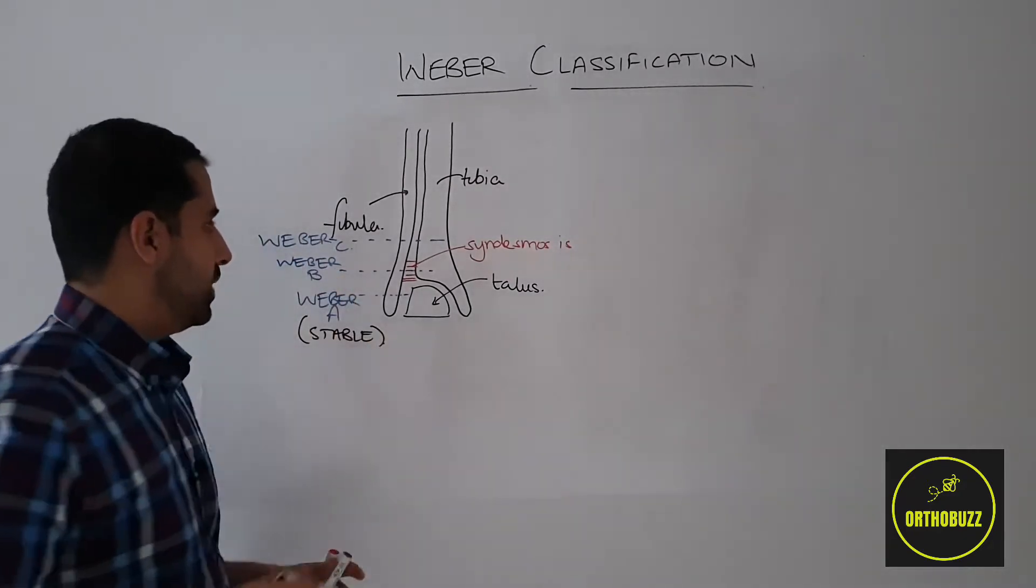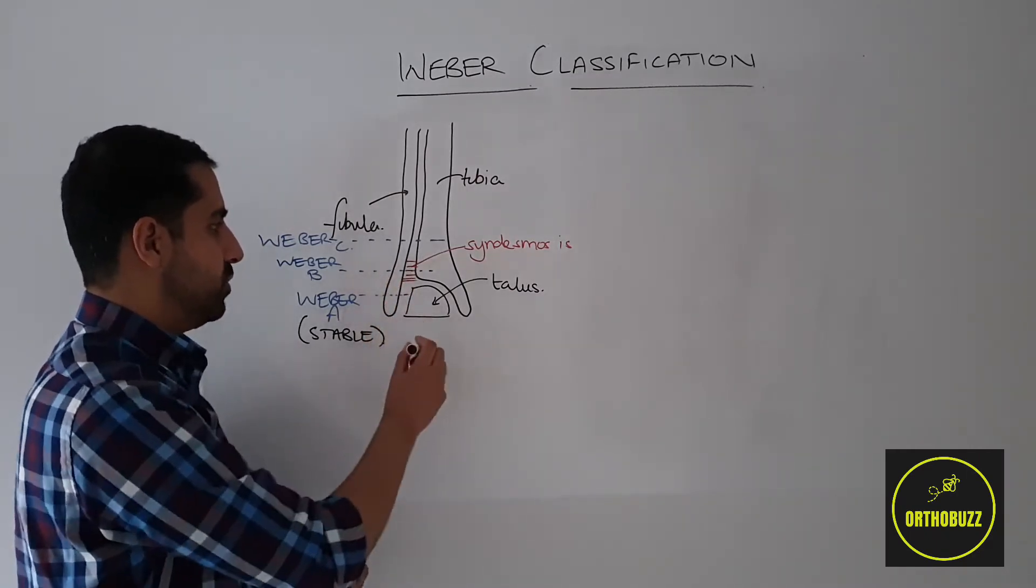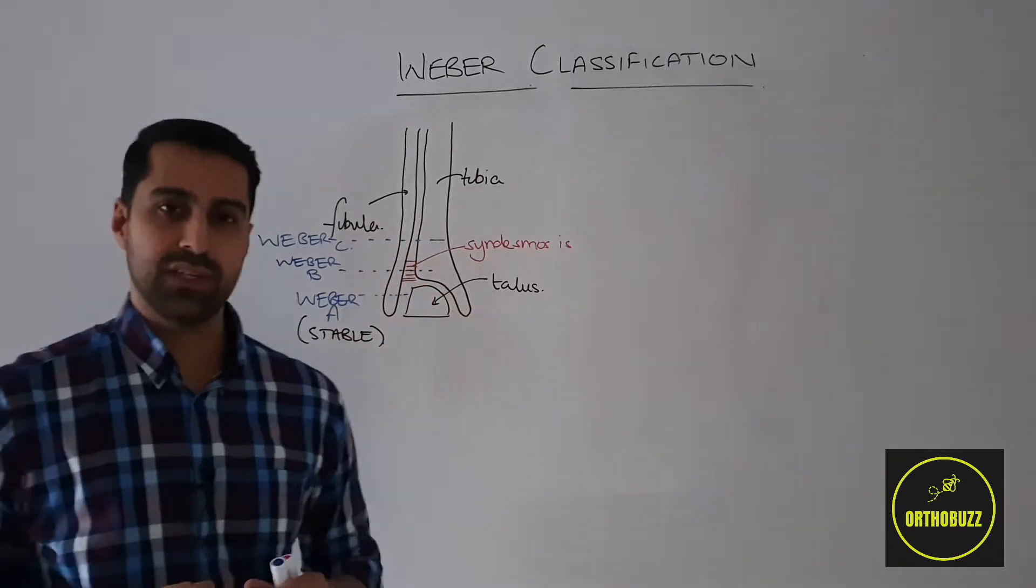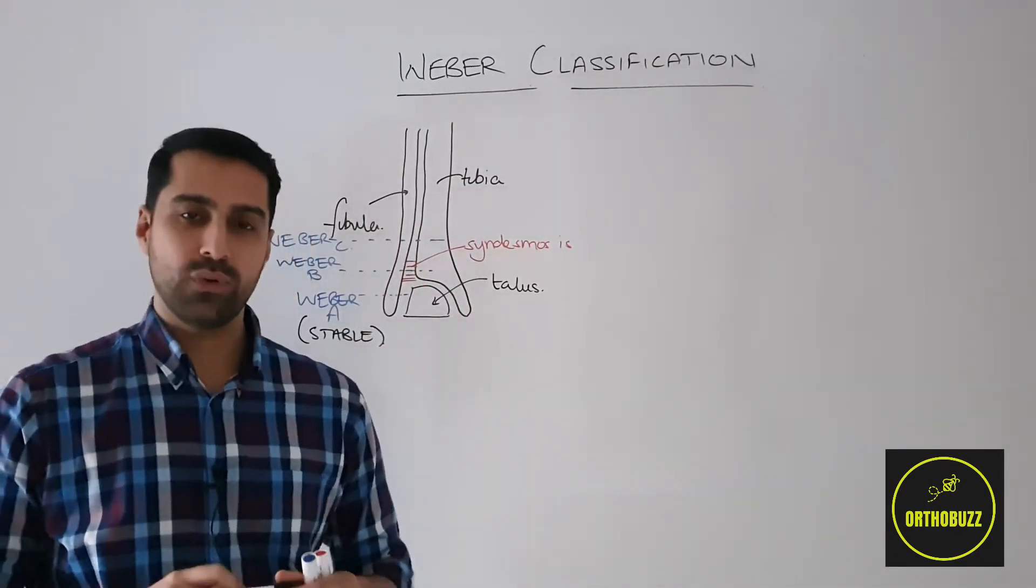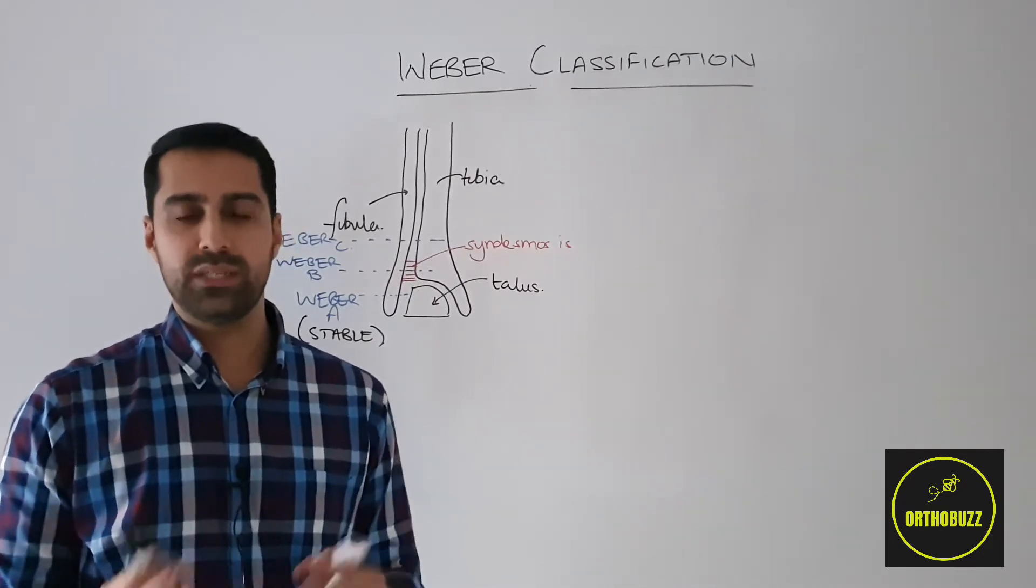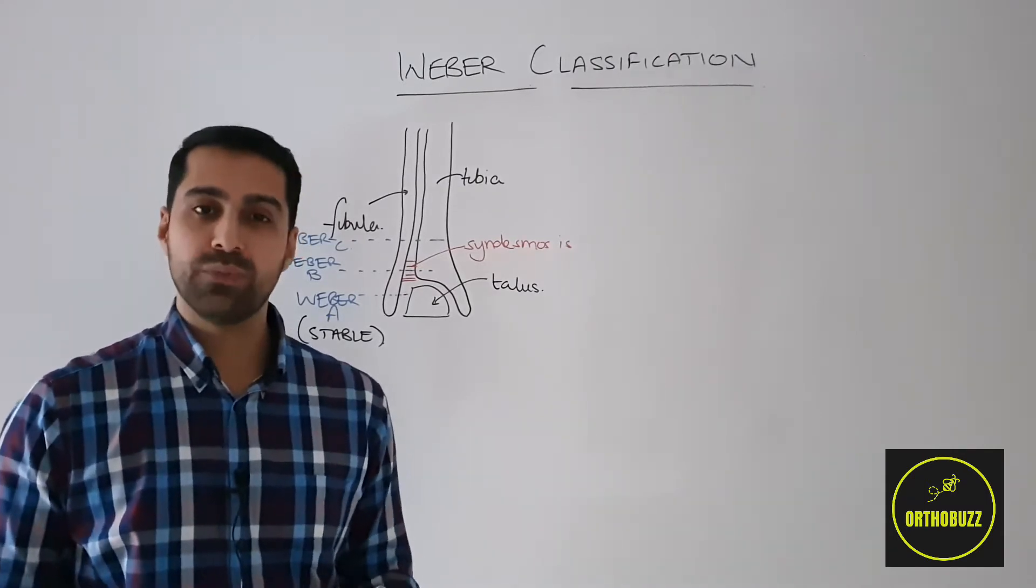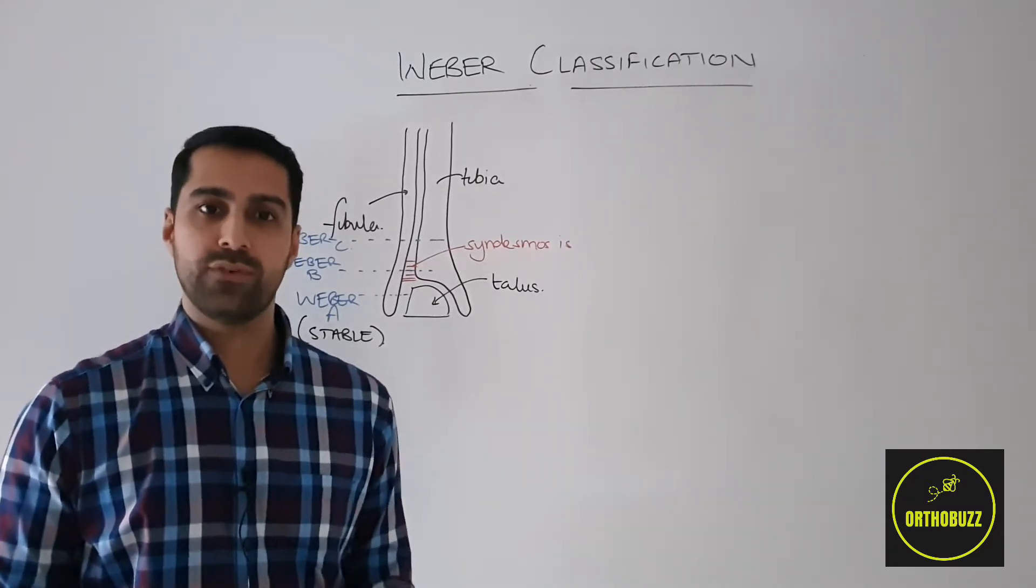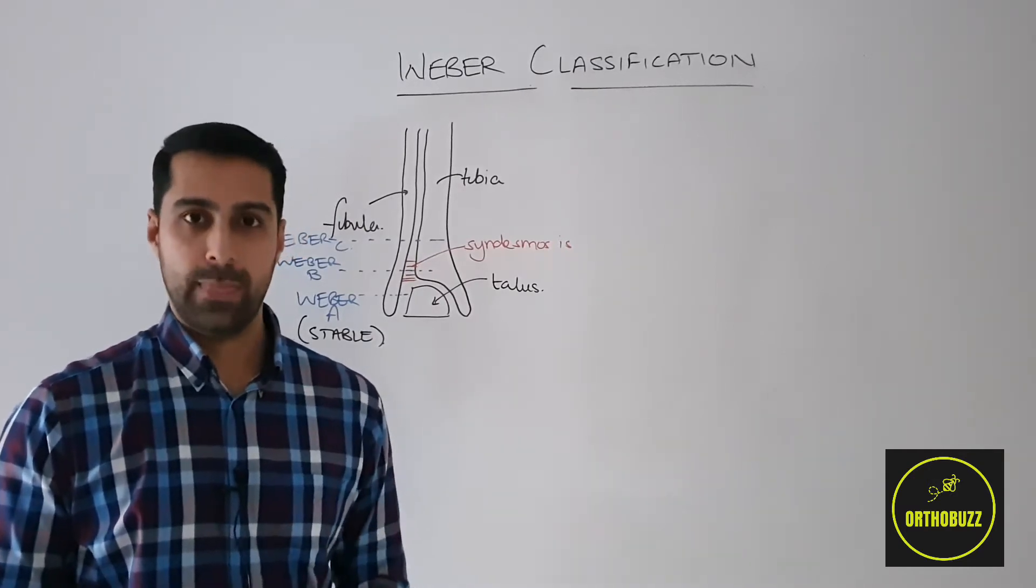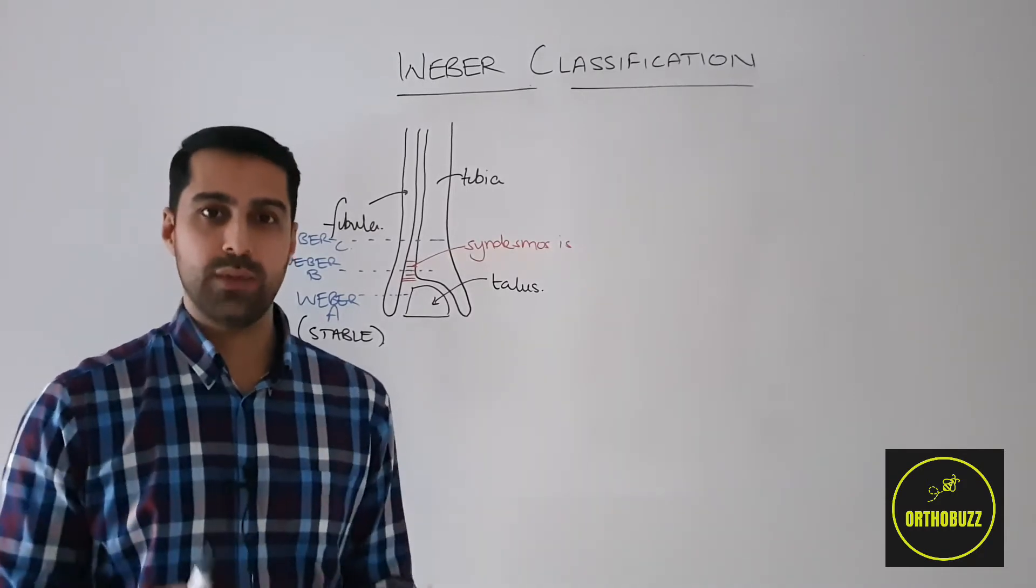Looking at Weber C injuries, we can see that a fracture above the level of the syndesmosis will have the energy traveling through the ankle and exiting above the syndesmosis. And therefore these will have compromised the syndesmosis whether or not it can be seen on an x-ray. There are certain radiological parameters and measurements that we look for on an x-ray to look for syndesmosis and whether this is intact or not. However, a Weber C fracture will have compromised the syndesmosis and therefore this is an unstable injury.